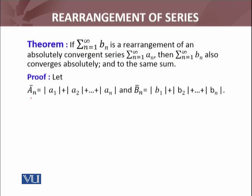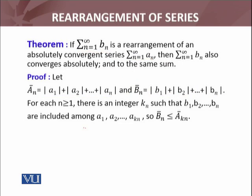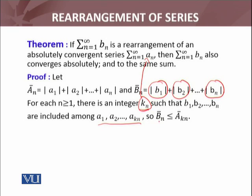For the proof, we take the partial sums of both series — the rearrangement and the absolutely convergent series. Ab, b_n is the rearrangement of the parent series a_n. For each n greater than or equal to 1, there is an integer k_n such that b_1, b_2 — the rearrangement — comes from the original series. For each b_i up to n, there is an integer such that b_i, which is in the rearrangement, has some index in the original series a_1, a_2, and so on.